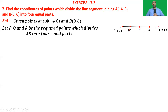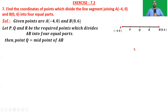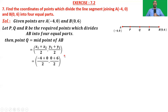We can observe that AP = PQ = QR = RB. So Q is the midpoint of AB. Using the midpoint formula, x1 plus x2 by 2, y1 plus y2 by 2, the midpoint of AB is (-4 + 0)/2, (0 + 6)/2, that is -4/2 comma 6/2, which equals (-2, 3). So we got the midpoint of AB, which is one required point.